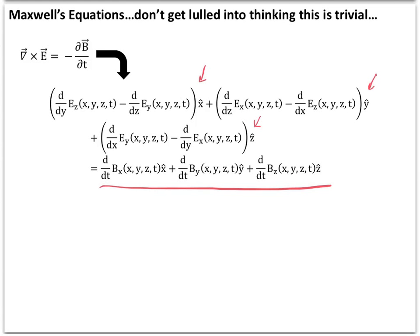Every element of the field — E sub X, E sub Y, and E sub Z — each depends on four variables: the X, Y, and Z position and time. Similarly, the magnetic flux, with its X, Y, and Z components, is also composed of four different variables — three spatial variables and a time variable. So this fairly simple equation, when you take the curl and expand it out, really has a lot of terms. None of it's that difficult, but these equations are really long. The shorthand notation hides the length of the calculations involved.